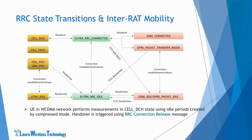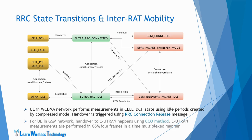When the UE is in WCDMA network with an ongoing data session, the UE is in Cell DCH state and performs EUTRA measurements using idle periods created by compressed mode. A handover to EUTRA can be triggered using an RRC connection release message, and the UE shall attempt to camp on a suitable LTE cell on one of the frequencies indicated in the handover command. When the UE is in GSM network, handover from GSM or GPRS to EUTRA happens using the Packet Cell Change Order method, which facilitates connection establishment in the target EUTRA cell. EUTRA measurements are performed in GSM idle frames in a time-multiplexed manner.